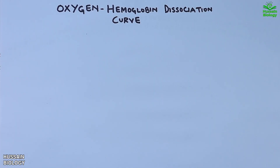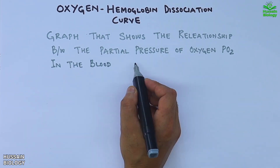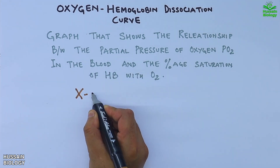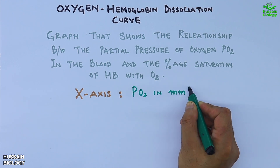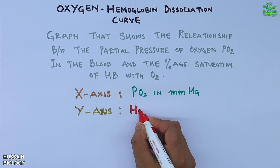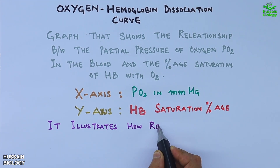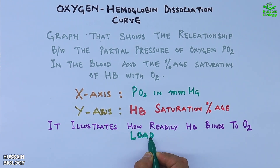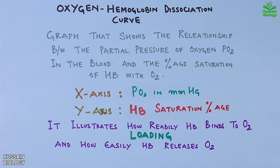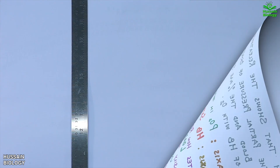This graph shows the relationship between the partial pressure of oxygen (PO2) in the blood and the percentage saturation of hemoglobin with oxygen. On the x-axis we have PO2 in millimeters of mercury, and on the y-axis we have hemoglobin saturation percentage. This curve illustrates how readily hemoglobin binds to oxygen — that's called loading — and how easily hemoglobin releases oxygen — that's called unloading — at different oxygen pressures.